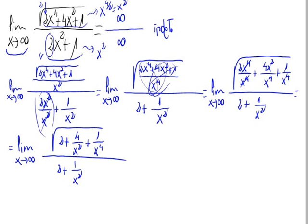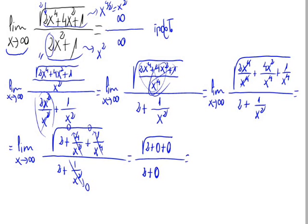When x approaches infinity, everything that has an x in the denominator equals 0. So we cross out those three terms. The numerator becomes the square root of 2 plus 0 plus 0, and the denominator is 2 plus 0. So the numerator is the square root of 2 and the denominator is 2. This is the result of the given limit.